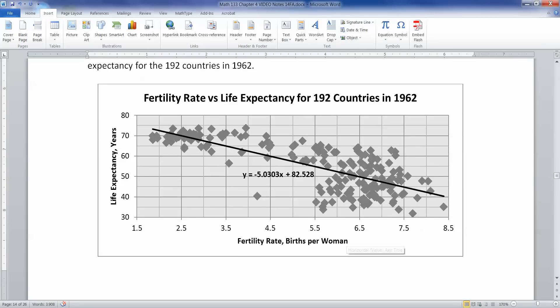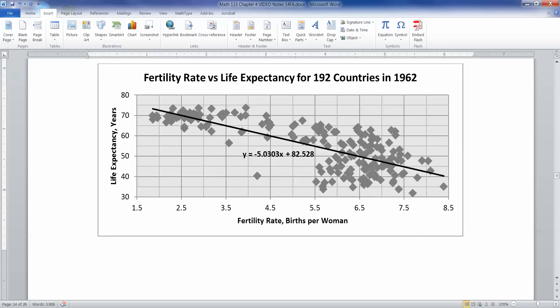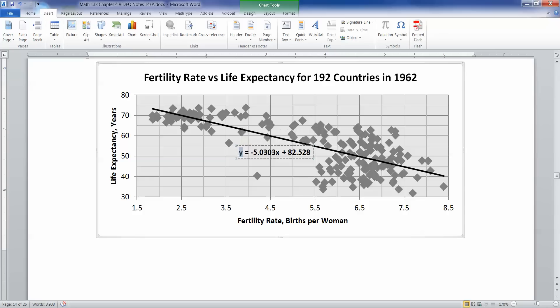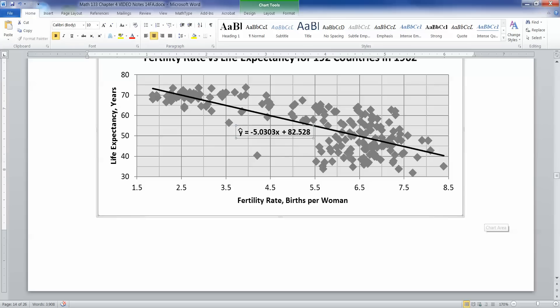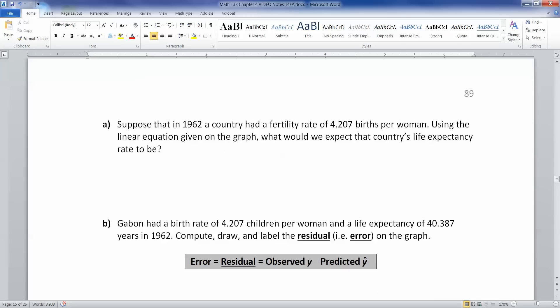So here is the fertility rate and births per woman and the life expectancy that we discussed in 4.1. And you can see I added in the equation of the regression line right there. So y equals negative 5.0303x plus 82.528. I can't put the hat on it because it's impossible for me, but there is a little hat up there above the y variable. Oh, there. I managed to get a little hat in there because technically it's a model. It's an average of those points. So this line is sort of like the average of all the points put together into a trend. And we're going to use that line to make predictions. So suppose that in 1962, a country had a fertility rate of 4.207 births per woman. Using the linear regression equation given on the graph, what would be that country's life, or what would you expect that country's life expectancy rate to be?